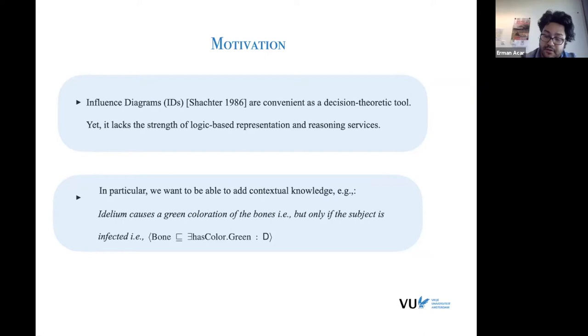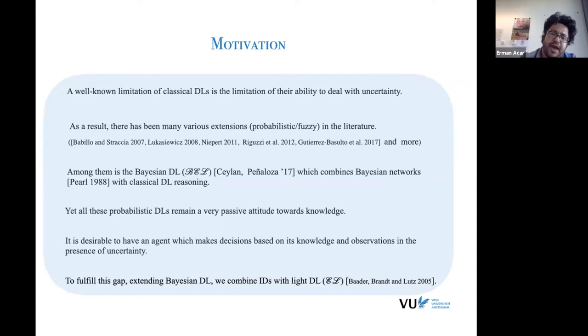So, on the other hand, we have description logics, which were not originally designed to deal with uncertainty. As a result, there was a motivation to come up with a lot of brilliant works that you see here to model or integrate uncertain representations to it. But these are, of course, from the lenses of a decision-theoretic situation, very passive attitudes towards knowledge. Of course, the agents cannot choose between different knowledge to make a contextual decision. And in this work, in order to fulfill this gap, we focus on one particular probabilistic description logic from Jalen and Peñolaza from 2017, and we extend it with the light description logic EL.